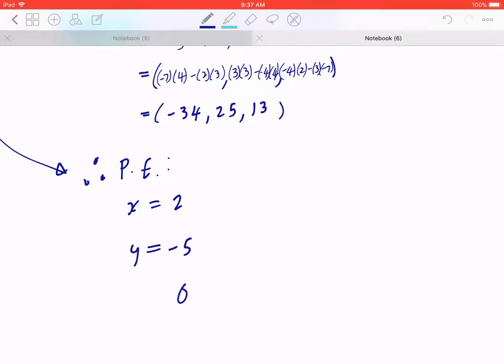And you can just copy the same format. The corresponding direction components are -34t, 25t, and 13t respectively. And it's really important that you write down t is an element of real numbers.